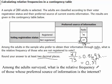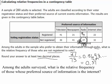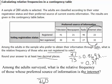Now let's look at another way to use the same data and calculate a different frequency. Among the adults surveyed, what is the relative frequency of those whose preferred source of information is the internet? We're looking at the total survey here, so our denominator is going to be the total number of people surveyed, which is 260. We need to add the internet values together — 22 plus 32 gives me 54. So 54 of the 260 people surveyed prefer the internet as their source of information.